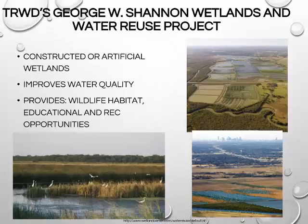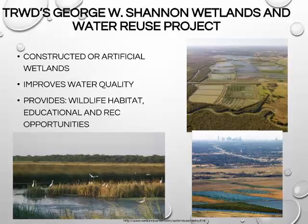Long before wastewater treatment facilities existed, wetlands were filtering pollutants from water. Environmental engineers and trained professionals now build artificial wetlands to clean wastewater. The microbes in the wetlands polish treated wastewater and remove excess nutrients, and the cleansed water is then released into waterways or percolates underground. The U.S. has over 500 artificial or restored wetlands.